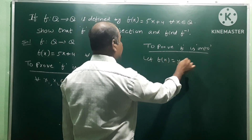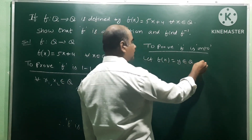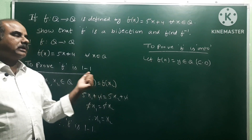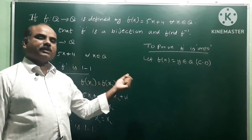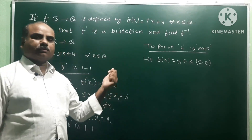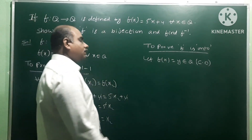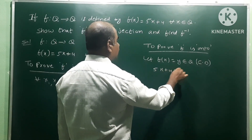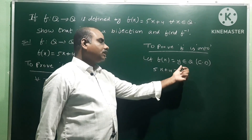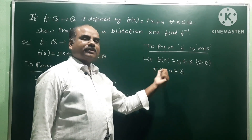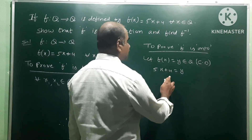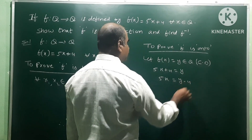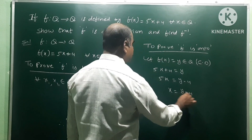Now to prove f is onto. Let f(x) = y, where y belongs to Q (the codomain). Since f(x) = 5x + 4, we have 5x + 4 = y. From this we get x = (y - 4) / 5.